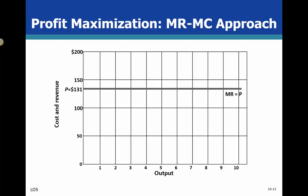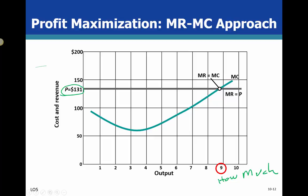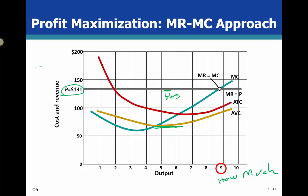Here's everything graphed out. Price equals marginal revenue — that's our horizontal line. Where marginal cost equals marginal revenue tells us how much to produce. The minimum average variable cost is shown, and since marginal revenue is above it, the answer is yes, we produce. Here's average total cost, and the gap between marginal revenue and average total cost — shown in green — represents the profit. We multiply that gap by the quantity, and the total area gives us the economic profit.